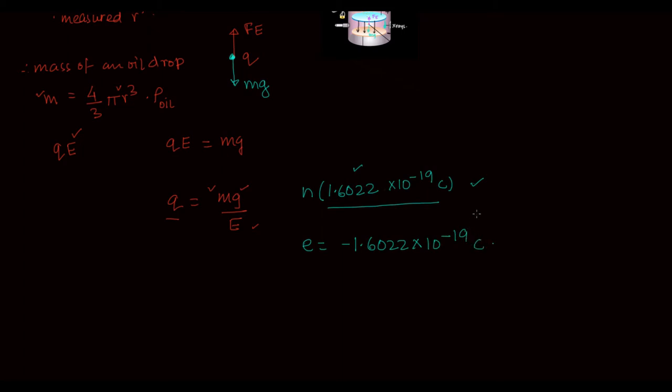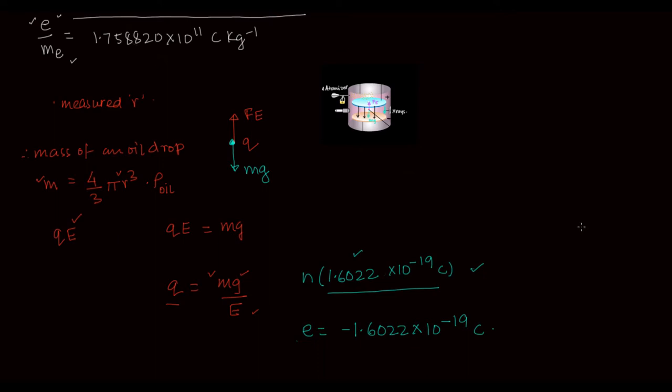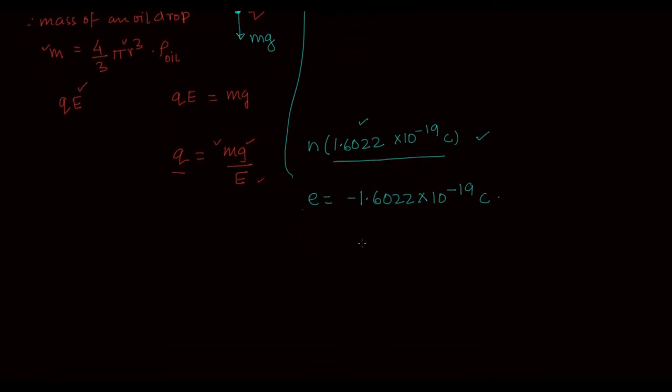This was the charge that must be on the electron. The moment you take this and plug it into the e/m value, you immediately get the mass of the electron, which came out to be 9.1094 × 10^-31 kg.